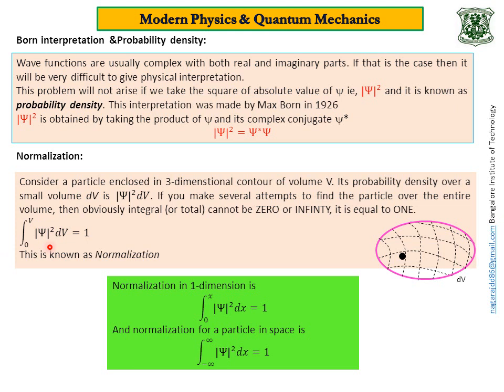This is normalization in three dimensions, and you can write even in two dimensions also. Then the limits change from 0 to A, A for surface area. And normalization for a particle in open space - the limits will change from minus infinity to plus infinity. What I mean to say is this one and this one are for a bound particle, and this is for a free particle. But in all cases, the RHS is equal to 1.